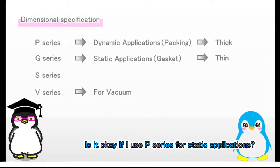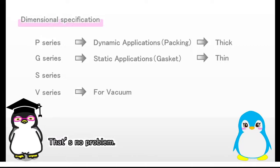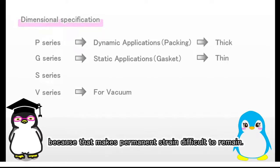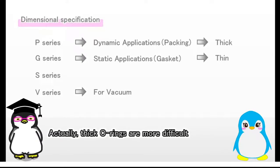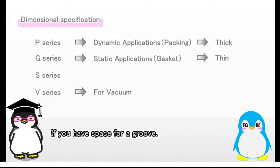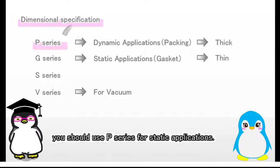Is it okay if I use P-series for static applications? That's no problem. Or rather, it's better if you use P-series for static applications, because that makes permanent strain difficult to remain. Actually, thick O-rings are more difficult to have permanent strain than thin O-rings. If you have space for a groove and if you are not on a tight budget, you should use P-series for static applications.